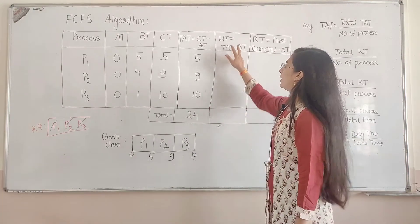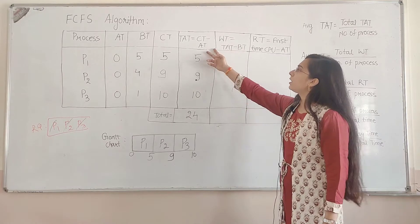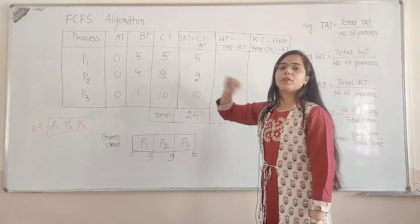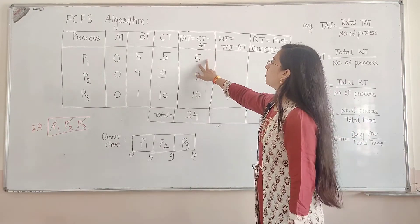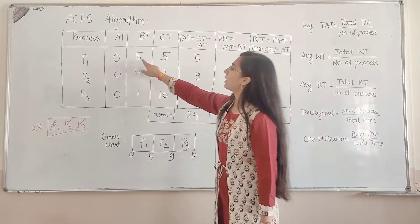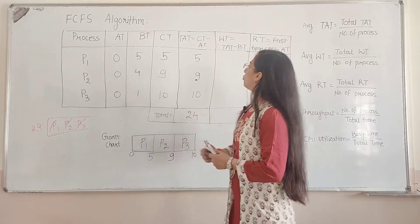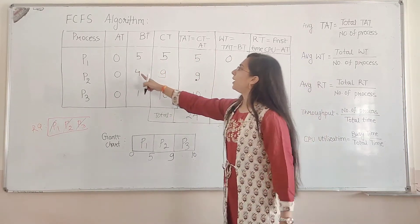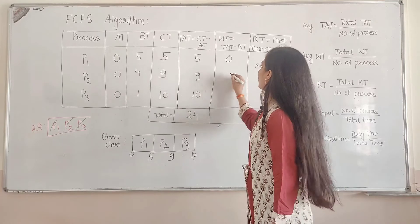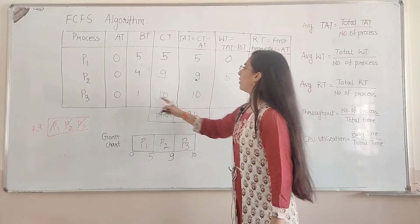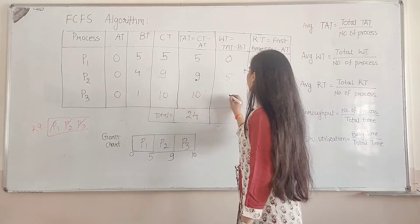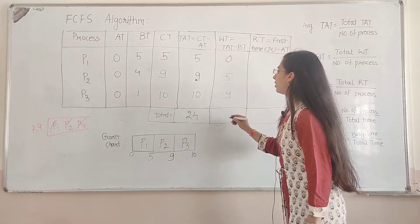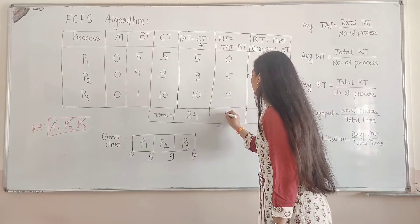Now, waiting time is the difference between turnaround time and burst time. For P1: 5 minus 5 = 0. For P2: 9 minus 4 = 5. For P3: 10 minus 1 = 9. The total waiting time is 9 plus 5 = 14.